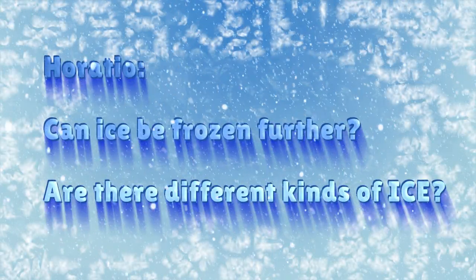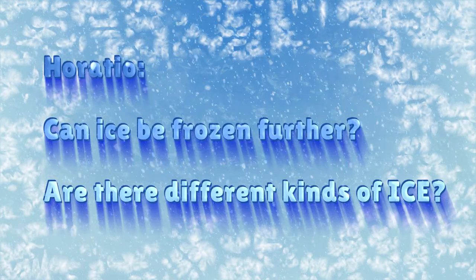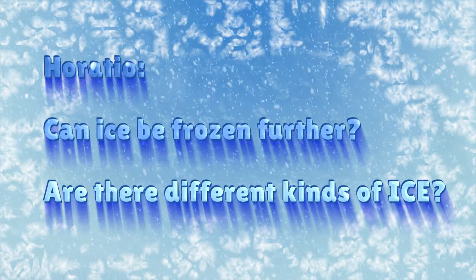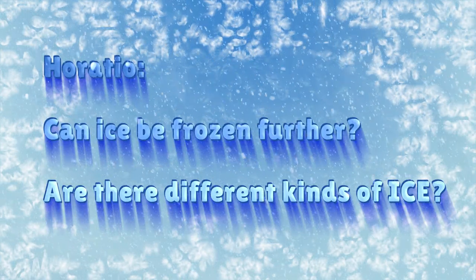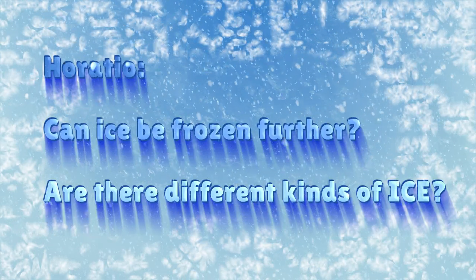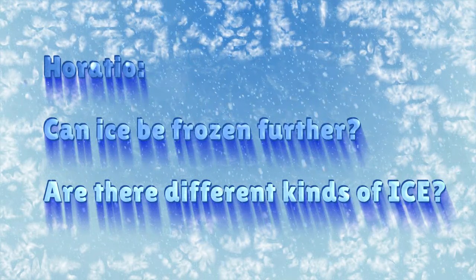We're talking about ice. You know ice. What happens to water when it freezes? At zero degrees Celsius here on the surface of the Earth. Horatio asked me, can ice be frozen further when exposed to colder temperatures? And are there different kinds of ice? That is a great question Horatio. Well, my first instinct is to say, no, don't be ridiculous. Ice is ice. Once it becomes ice, where is there to go from there?